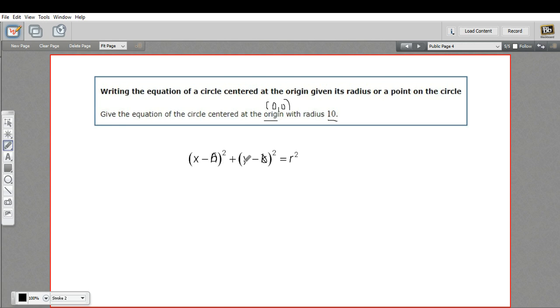you get x minus 0, y minus 0. That's just x and y, and then you square them, and you're going to get x squared plus y squared.